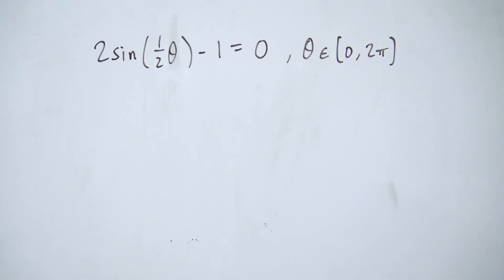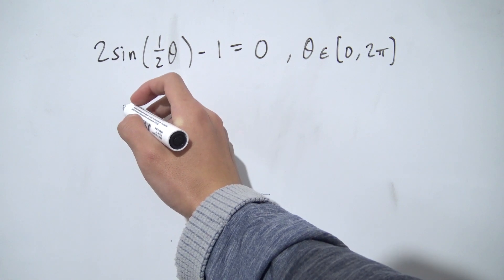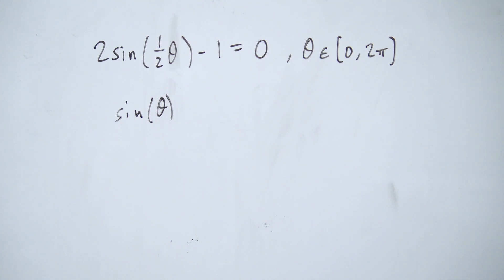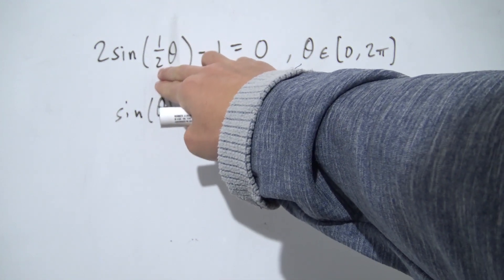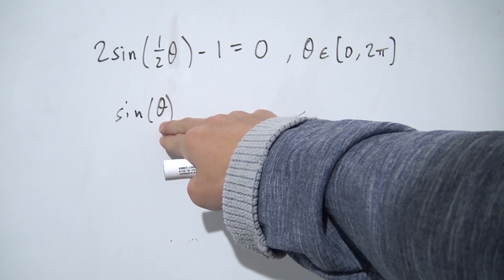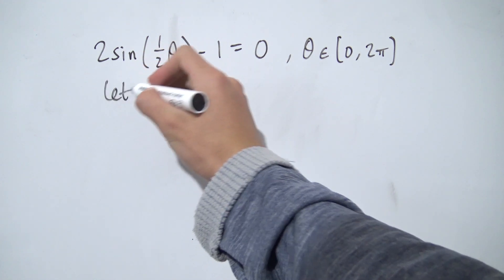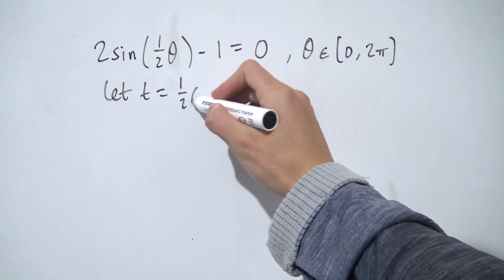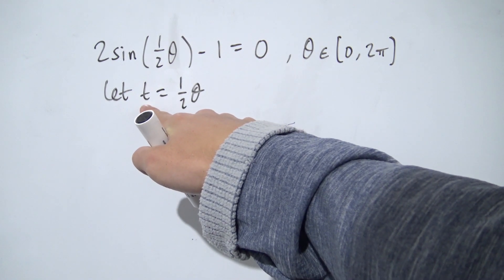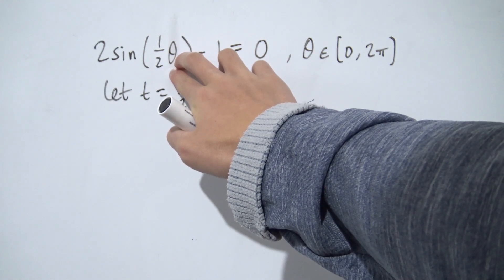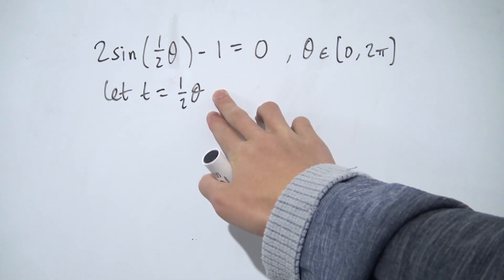We're still given an equation to solve and a domain to work in. We all know how to solve an equation with just the sine of an angle — we think about our unit circle and see which points match up. So wouldn't it be nice if we could transform this one-half theta into just a single angle? To do that, why not use a substitution? Let some new angle — let's call it t — be equal to one-half theta.